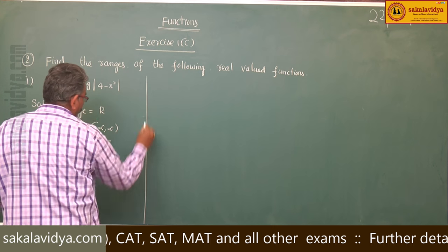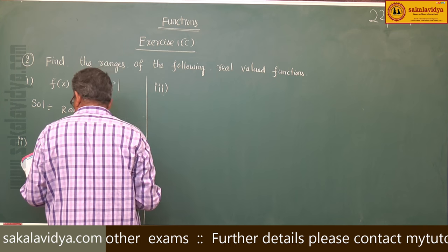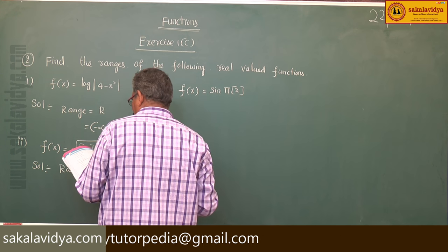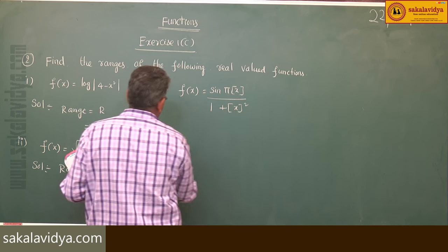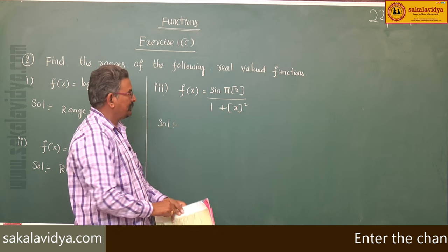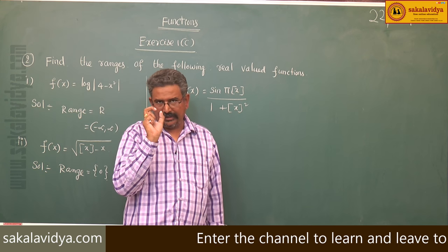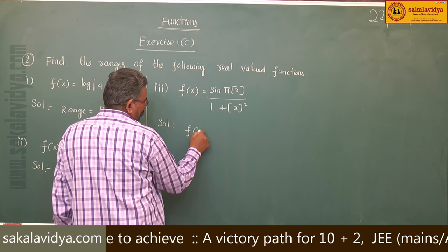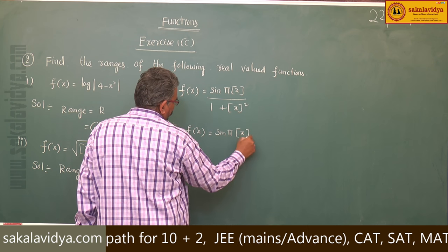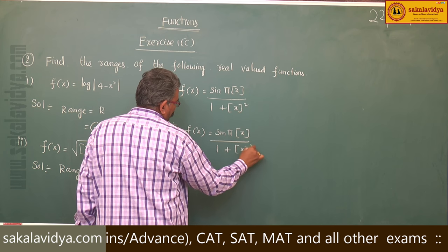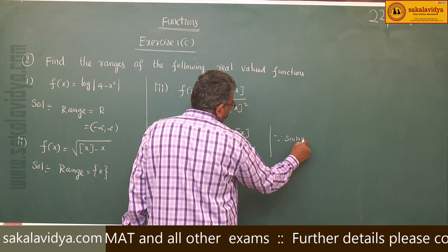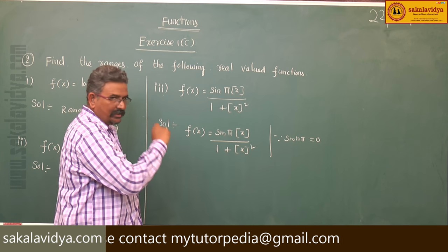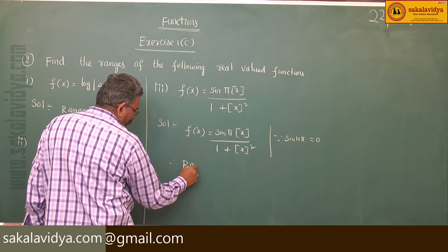Third one: f of x is equal to sin of pi times [x] divided by 1 plus [x] squared. Since [x] is the greatest integer function, it takes integer values only. So f of x becomes sin of n pi divided by something, and sin of n pi is always 0. Zero divided by any value is 0. Therefore, range is always 0, and range is equal to {0}.